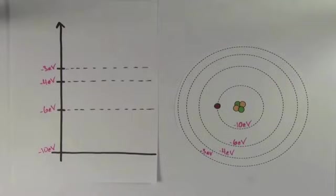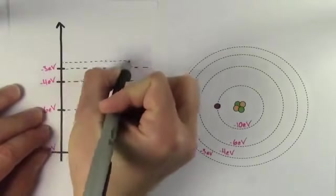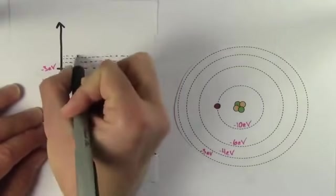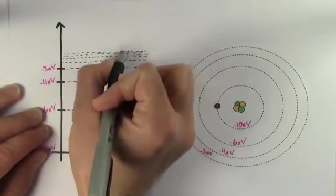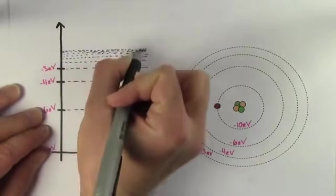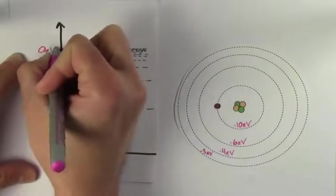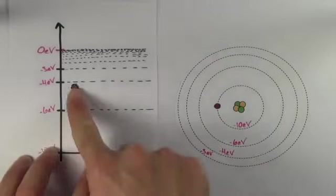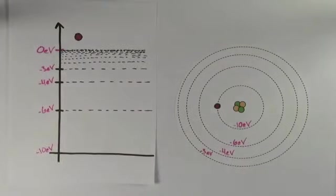Something else that's unrealistic about our hypothetical atom is that real atoms wouldn't just stop at negative 3 eV for the highest energy level. Real atoms have energy levels that get closer and closer together as you approach 0 eV. What happens when an electron gets more than 0 eV energy?